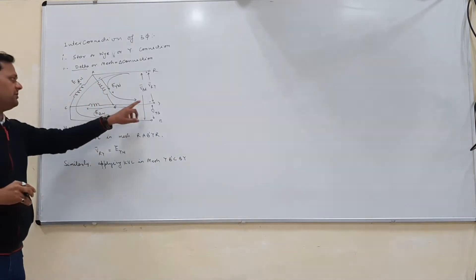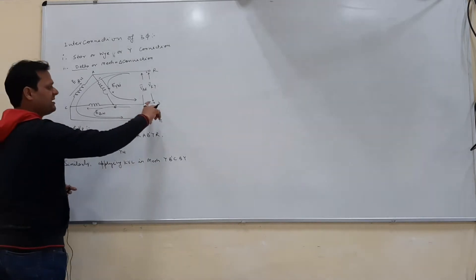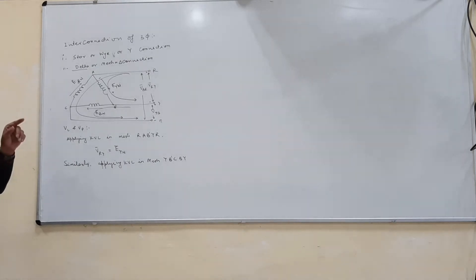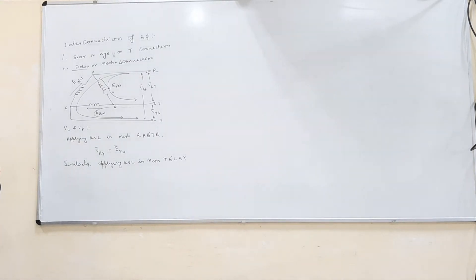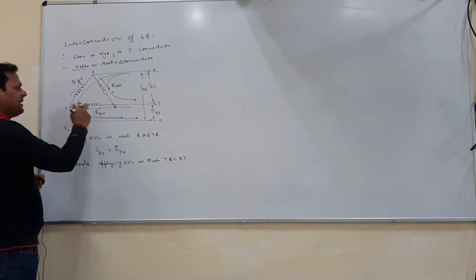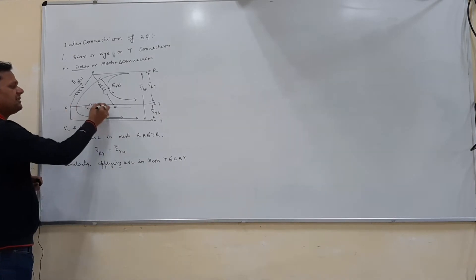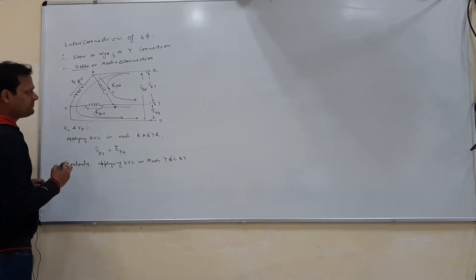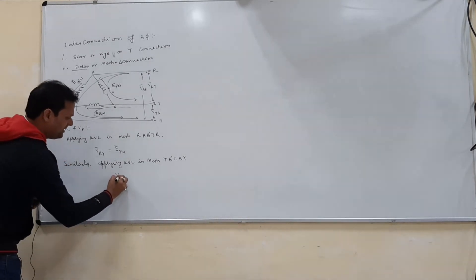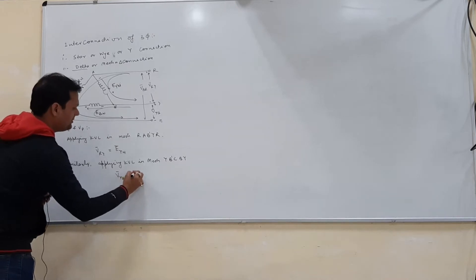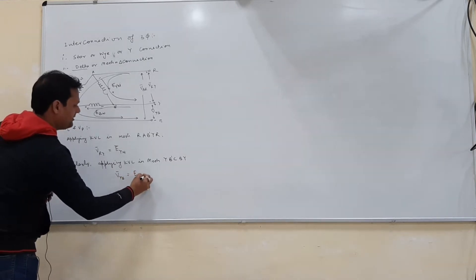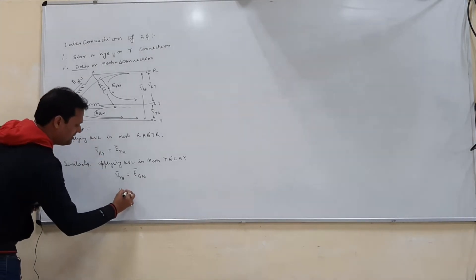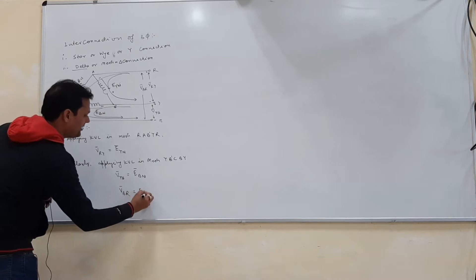Applying KVL in this loop, VYB means the voltage of line Y with respect to line B — this is positive, this is negative. So we get VYB equals to EBN. And applying KVL in the third loop gives VBR equals to ERN.